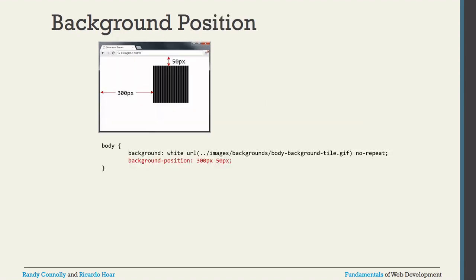For background-position, you can control where the image appears using two values. The first value is the horizontal offset from the left, and the second value is the vertical offset from the top. For example, background-position: 300px 50px places the image 300px from the left and 50px from the top.